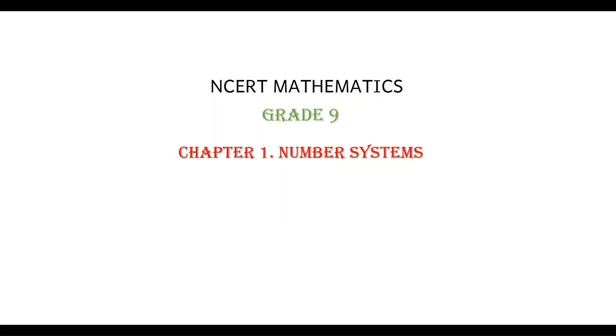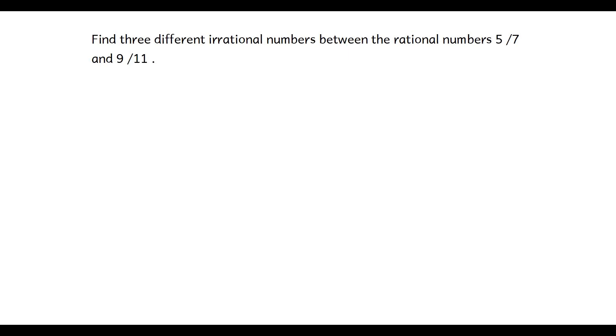In this video, we will see NCERT Mathematics for Grade 9, Chapter 1, Number Systems. Next we will see problem number 8. Find three different irrational numbers between the rational numbers 5 by 7 and 9 by 11.